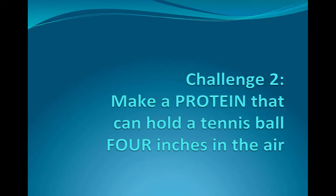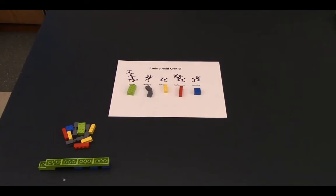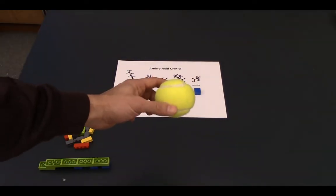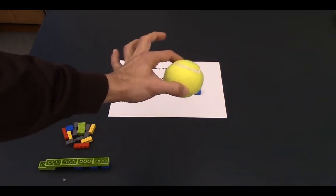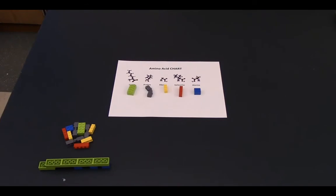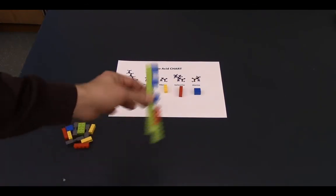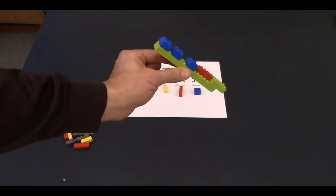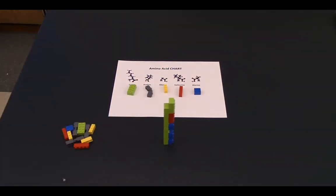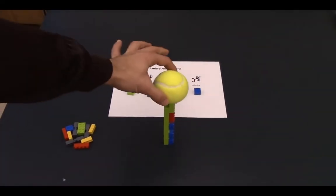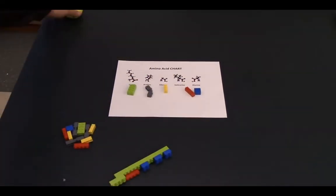Challenge two: make a protein that can hold a tennis ball four inches in the air. The task is simple — suspend this tennis ball four inches above the surface of the table using your Lego protein. The first thing students usually do is construct peptides, and they try balancing their thin, relatively unstable peptide in the air. They say, 'Mr. Lippin, try this.' And it doesn't work very well.